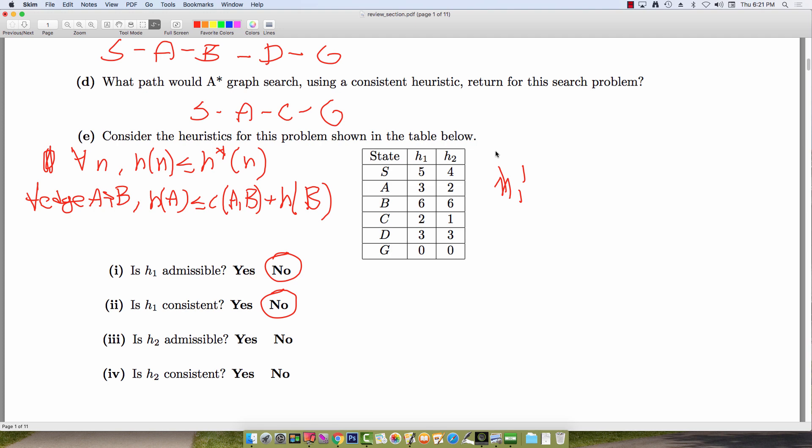Now we can find that H2 is admissible by seeing that this modified heuristic H1-prime actually dominates H2, which means that H1-prime(N) is greater than or equal to H2(N) for each node N. And because of that, we know that if an admissible heuristic dominates another heuristic, the latter heuristic is also guaranteed to be admissible.